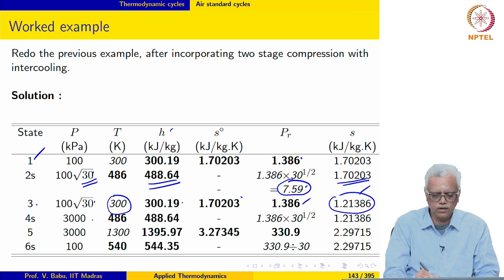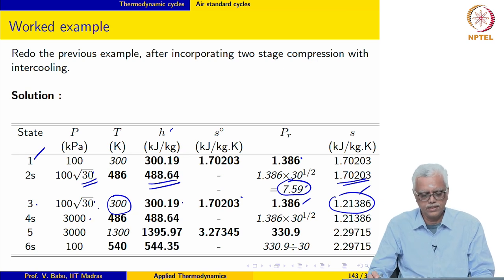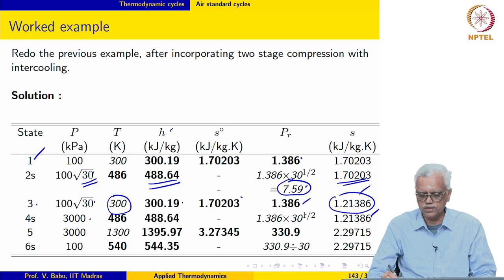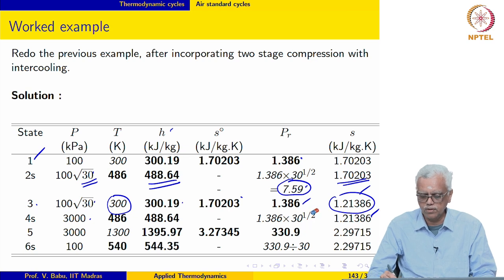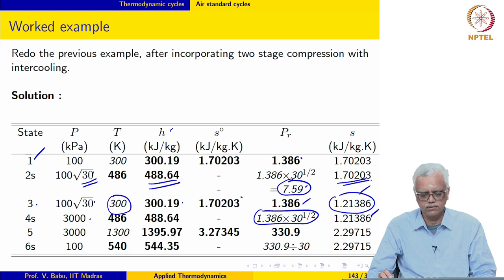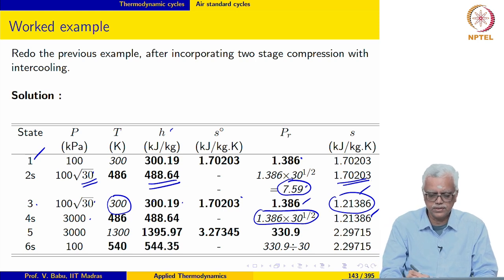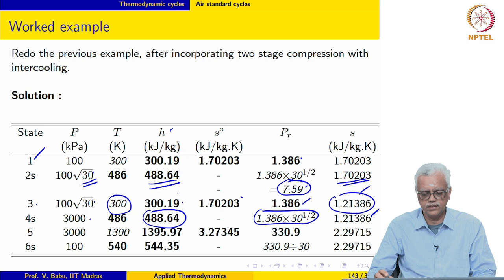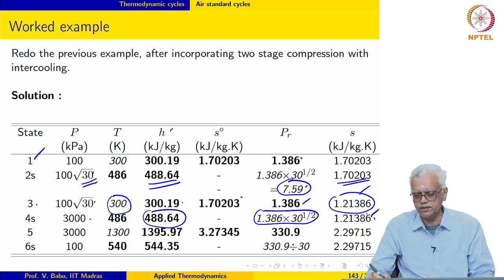The specific entropy at state 3 comes out to be 1.21386. At state 4S the pressure is 3000 and PR_4S is PR_3 times the square root of 30. We enter the table with this PR value and retrieve the specific enthalpy. Specific entropy need not be evaluated because S_4S equals S_3.